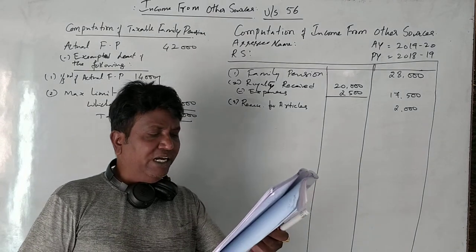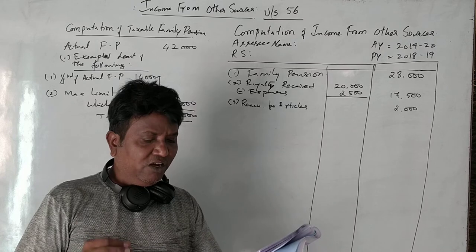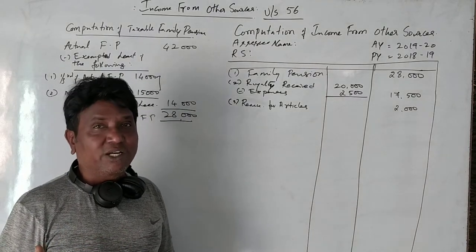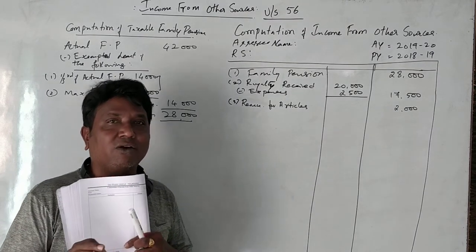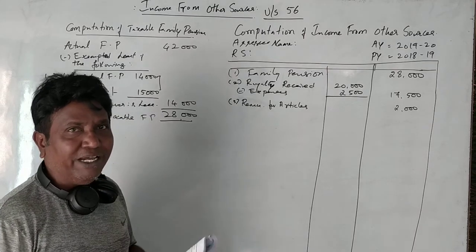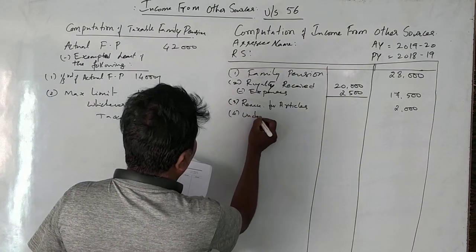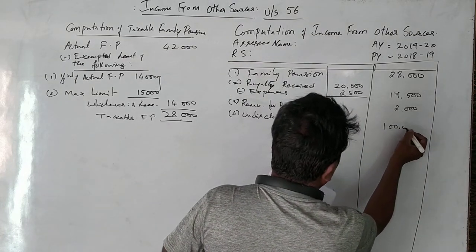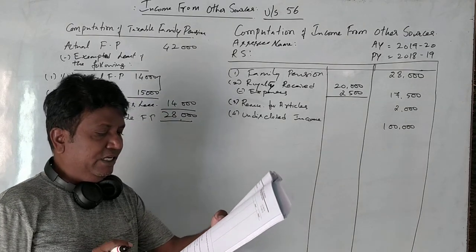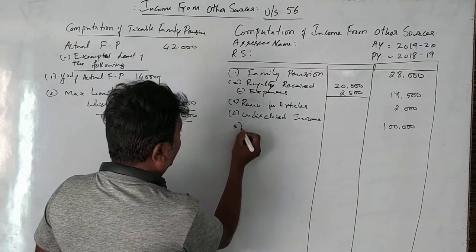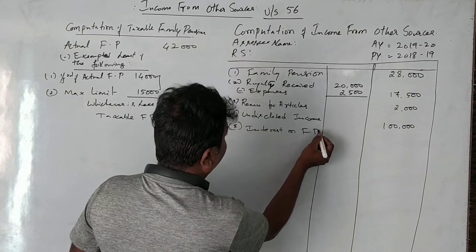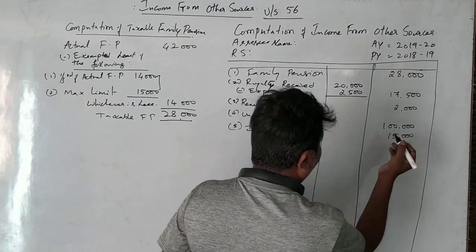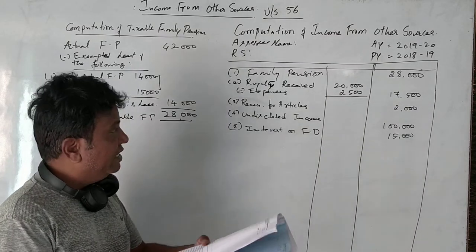Cash worth one lakh rupees was found in his private locker, the source of which could not be explained by him. This is called undisclosed source of income — unaccounted money not properly explained — so one lakh rupees is fully taxable under the head income from other sources. Next, interest on fixed deposits: gross amount means the full amount before deducting taxes, so 15,000 rupees is completely taxable.